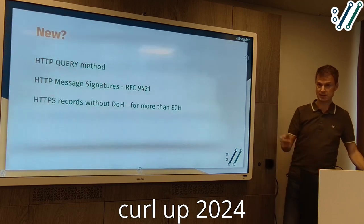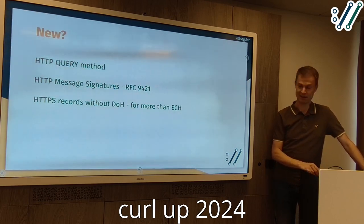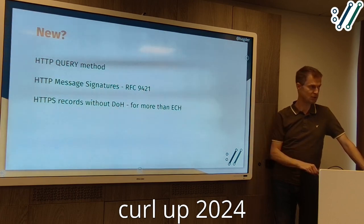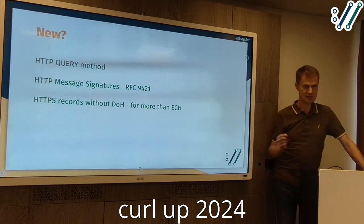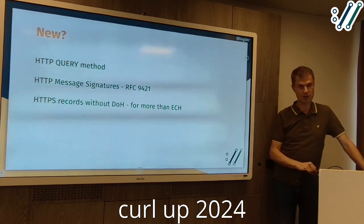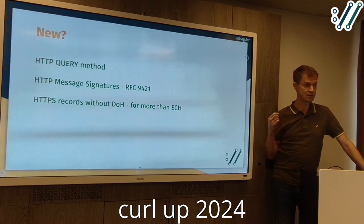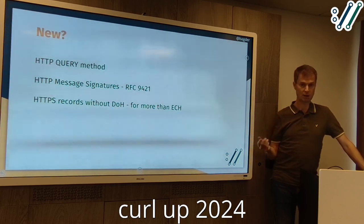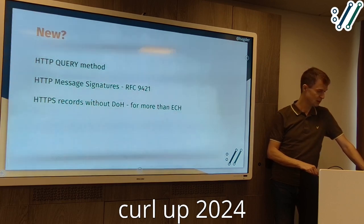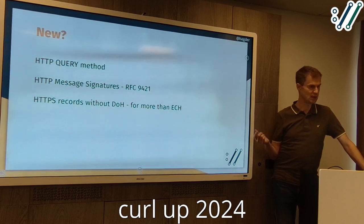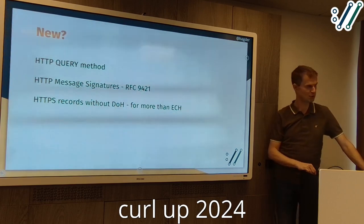The ECH crowd — I think they're two, Steven and Niall — have more ideas about polishing things around ECH. Related to that are HTTPS DNS records. We can use HTTPS DNS records for more stuff than just ECH — in particular, it's a good signal for knowing if we should try HTTP/3 for a particular host. And there are a few other things we could potentially fetch from DNS records.